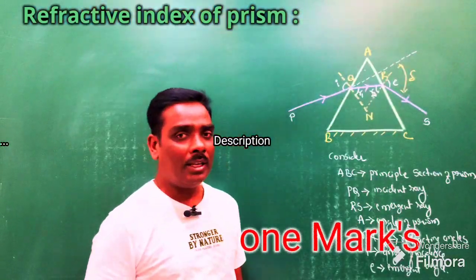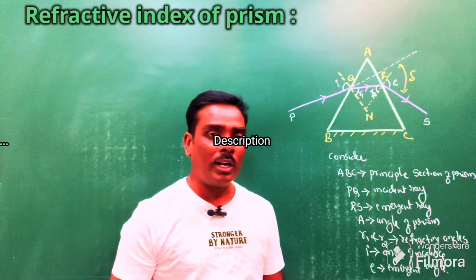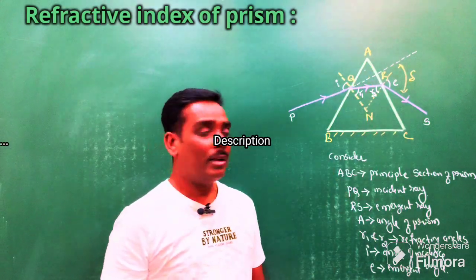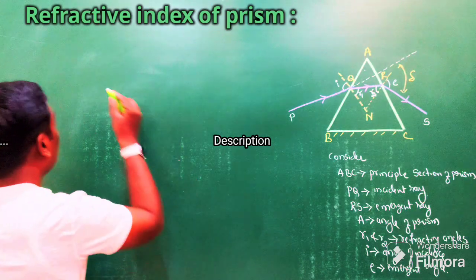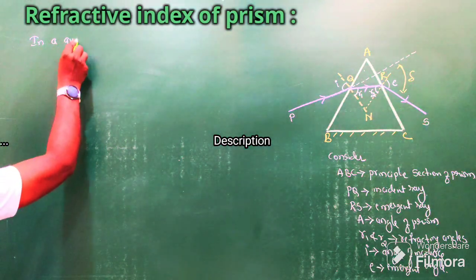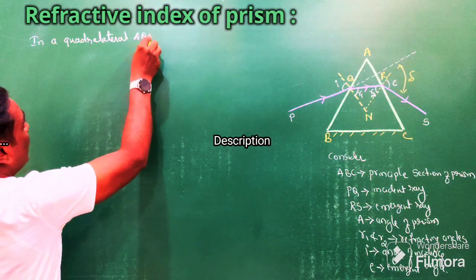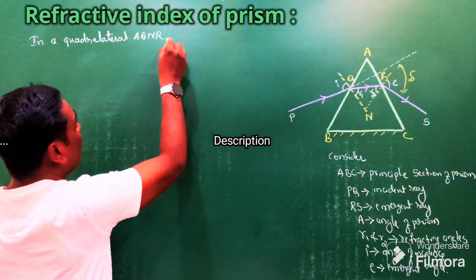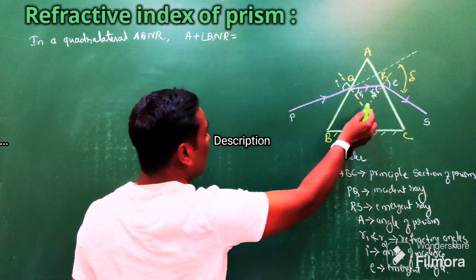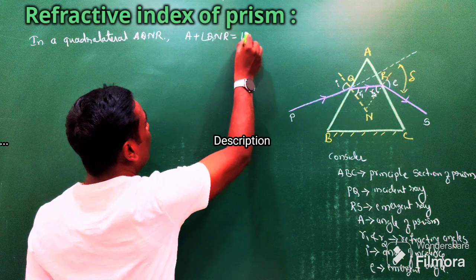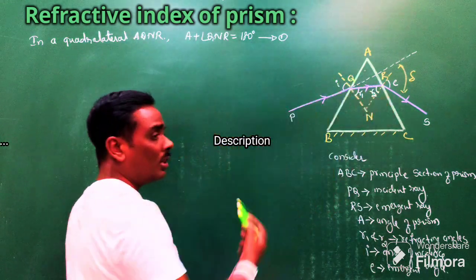To prove mathematically, consider quadrilateral AQNR from the diagram. In this quadrilateral, the sum of the two opposite angles A and QNR are supplementary, meaning angle A plus angle QNR equals 180 degrees. Call this equation number one.